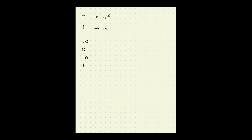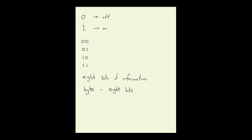In computer systems, it's very common to send messages based on eight bits of information. It's so common that we define another term called the byte, which is equal to eight bits. So a bit and a byte are two units of information — a bit is a single binary digit, and a byte is eight binary digits.